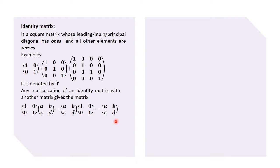In either case, the answer will simply be [a, b; c, d]. An identity matrix behaves like the number one — just as one times a number x gives us x, an identity matrix pre- or post-multiplied by any matrix gives us that same original matrix unchanged.